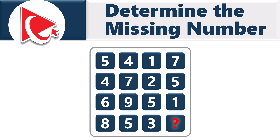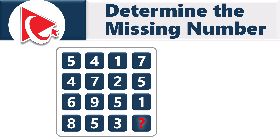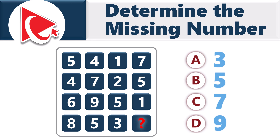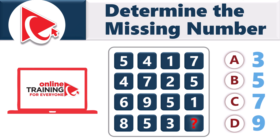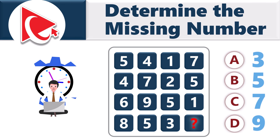Select the missing number from four choices: Choice A, 3; Choice B, 5; Choice C, 7; Choice D, 9. Whether you're an existing subscriber or considering becoming one, I have full confidence you can solve this challenge by giving yourself enough time to think about it.